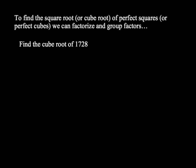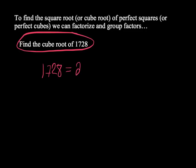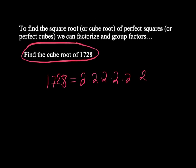Okay, cube roots work exactly the same way. There's actually nothing different to this question. So when it says find the cube root of 1728, we'll do the exact same process. We will do the prime factorization of 1728. If you do that on your own, you would end up with 1728 is 2 times 2 times 2 times 2 times 2 times 2 — that's six 2s — times 3 times 3 times 3 times 3.